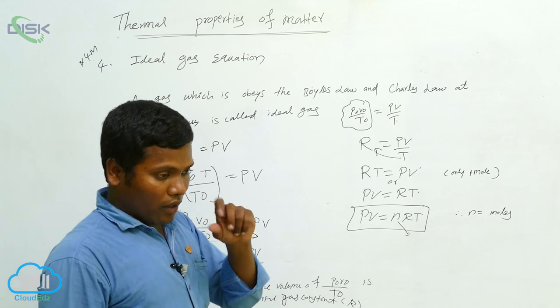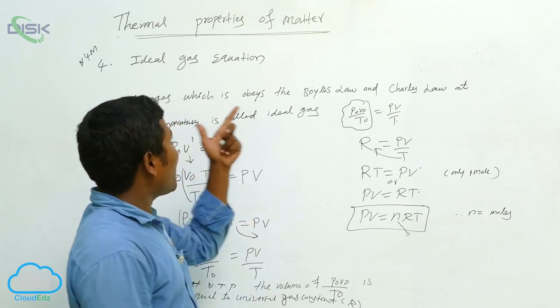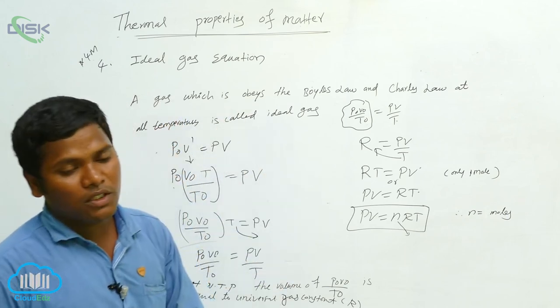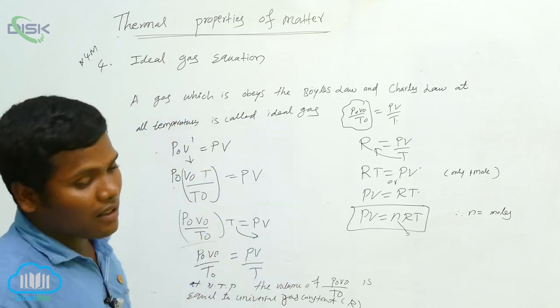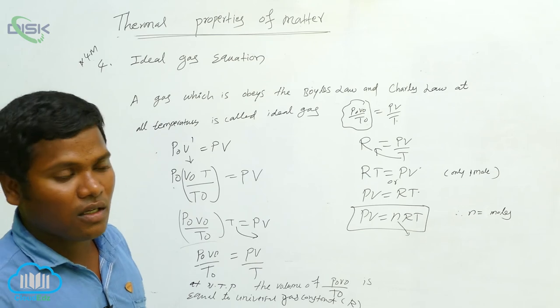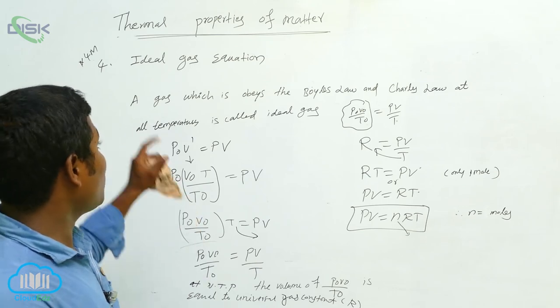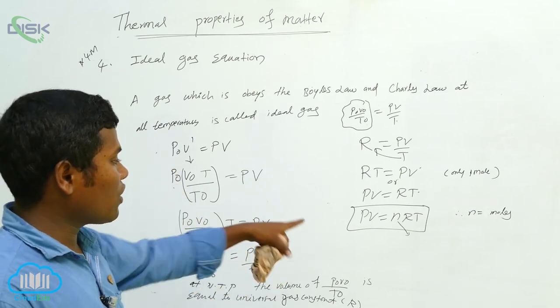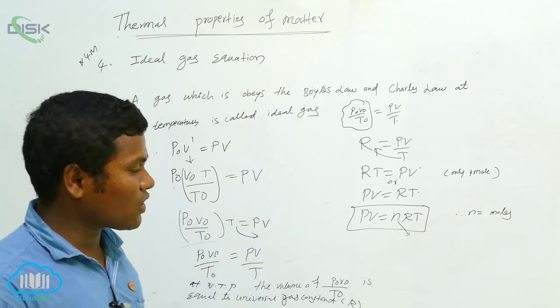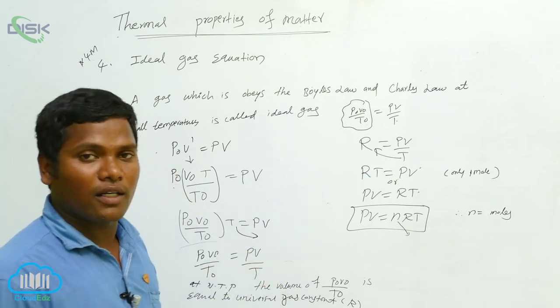In the exam, if they ask you to derive the ideal gas equation, first you have to define Boyle's law, next Charles' law, then go for the derivation, and finally prove that PV is equal to nRT.